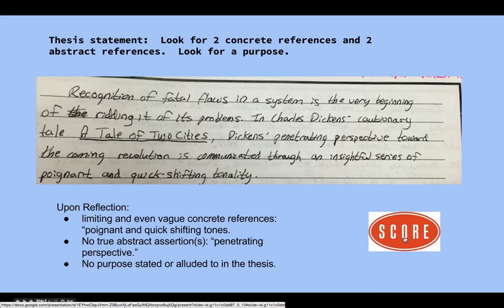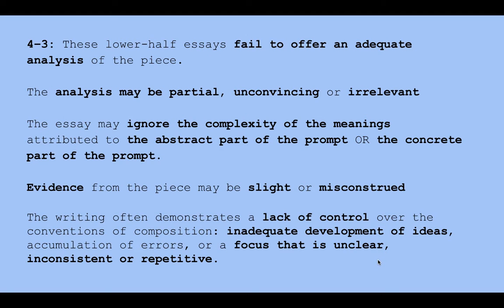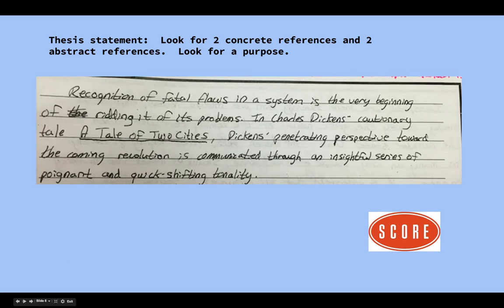So this thesis has a universal truth, a tag, language that's difficult to understand, two references to the concrete, and an abstract — but none of which is really the controlling idea for the essay, which is what a thesis statement does. I would score this in the three-to-four range — there's inadequate development of ideas, the focus is unclear, and it seems unconvincing or even partial. This thesis ignores the complexity of meaning attributed to both the abstract and concrete parts.